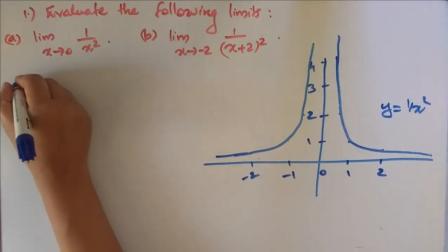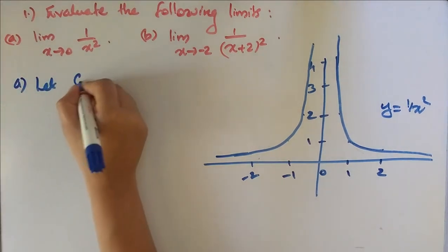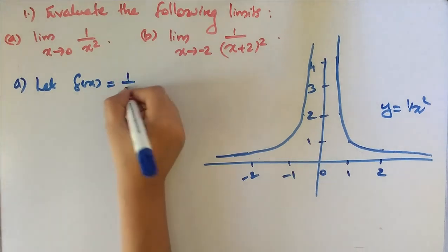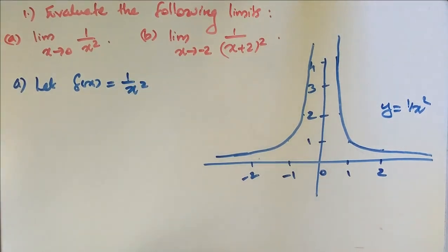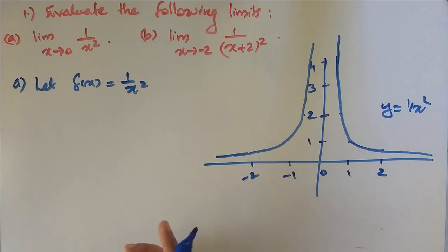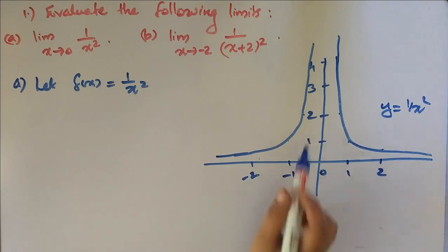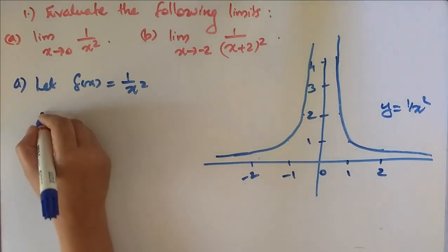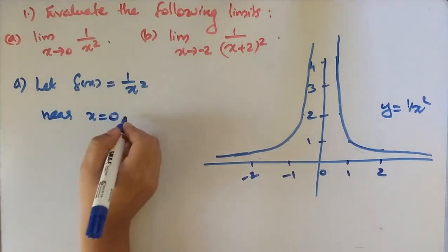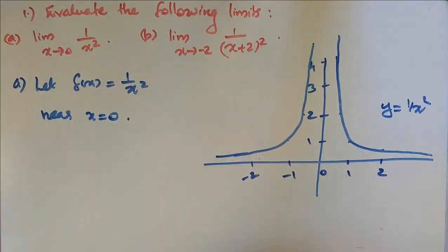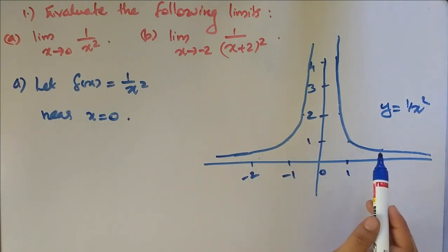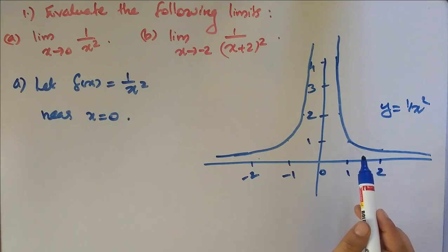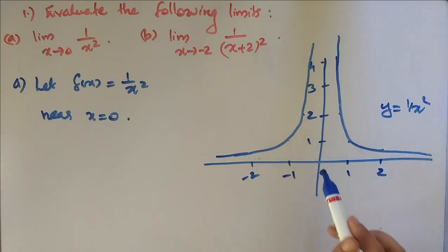Let f(x) equal to 1 by x squared. Consider the behavior of f(x) = 1/x² near x equal to 0. As x approaches 0 from both sides, values of x squared are positive.